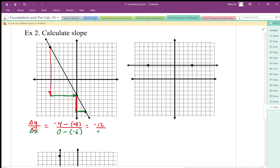So our run is positive 6. And when we work out that ratio, we can simplify that ratio to negative 2 to 1. So there's our slope.